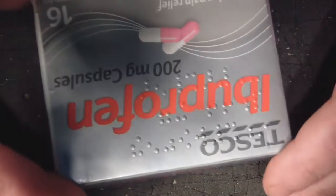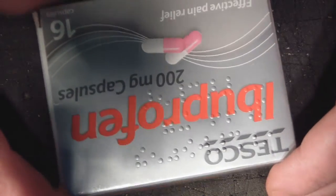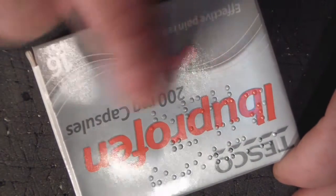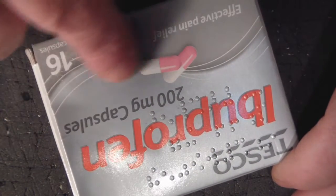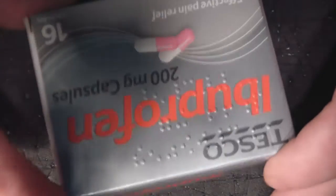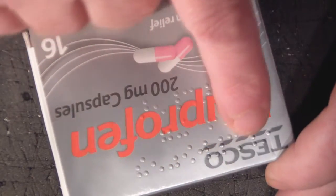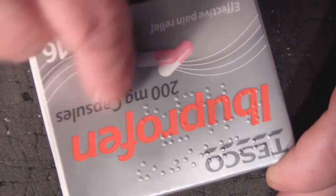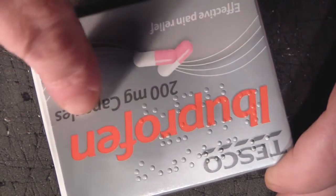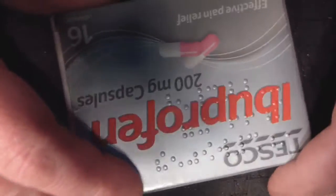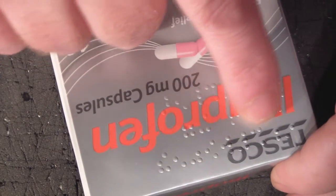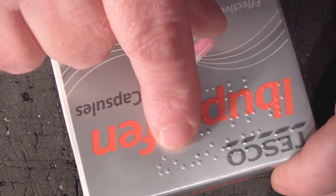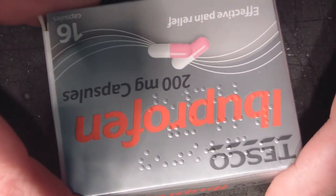I got the idea from looking at this packet of painkillers. It says ibuprofen 200 mg capsules, but here there's actual Braille that tells somebody who's visually impaired what's in this packet. I was thinking if we could make an electronics kit for somebody who's visually impaired.